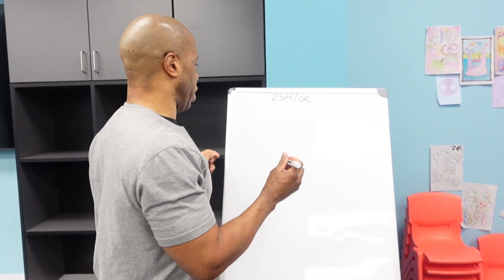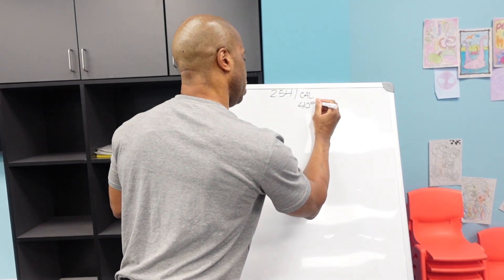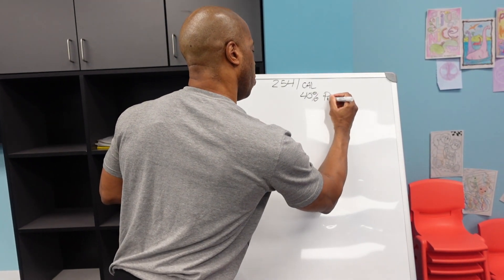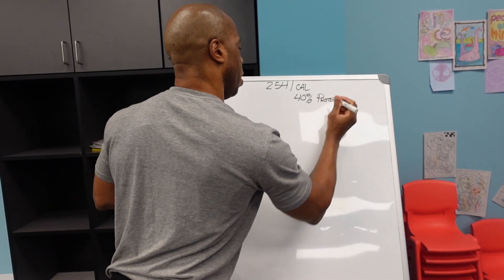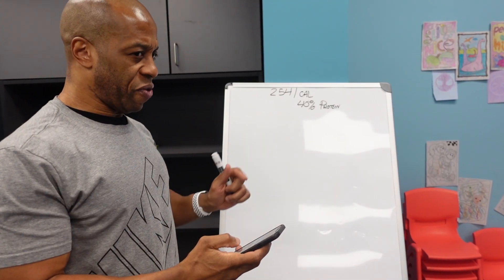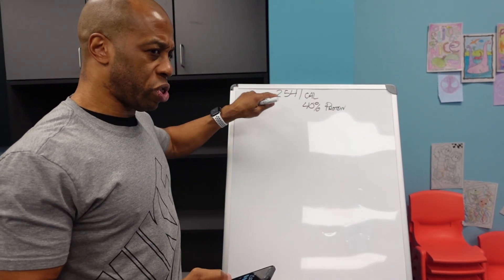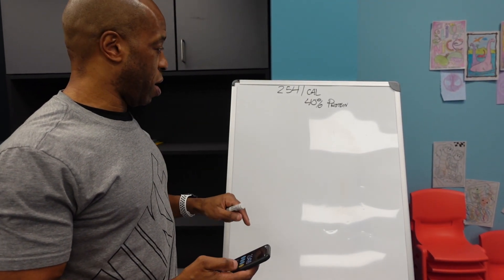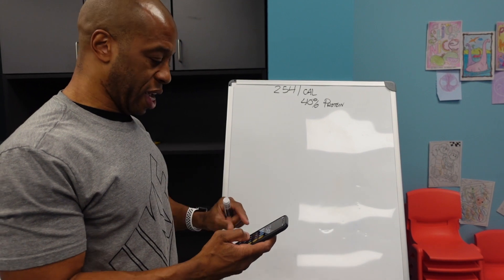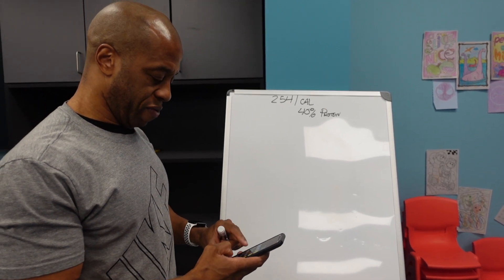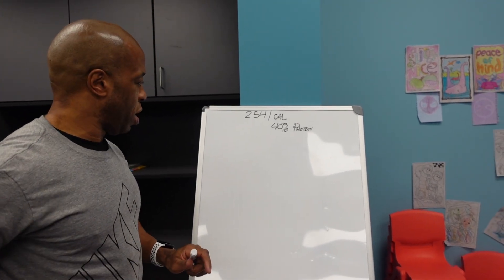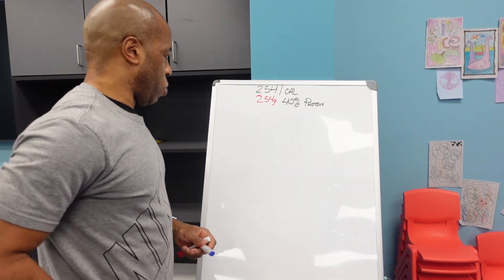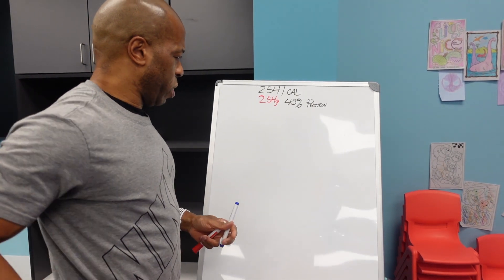So we gave you 40% protein. These percentages can be adjusted, because calories are the most important thing for you first. Macros are second, and they do make a difference. That comes out to 254 grams of protein.